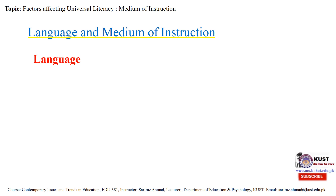First, what is meant by language? A language is a system of communication which consists of a set of sounds and written symbols, used by the people of a particular country or region for talking and writing. Language is basically a system of conventional spoken, manual or written symbols by means of which human beings, as members of a social group and participants in its culture, express themselves. Language is used to inform others, to ask them to do certain things, and to express feelings, moods, ideas, information and experiences.